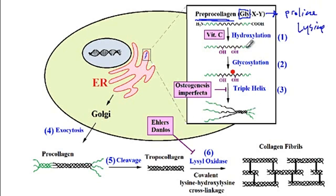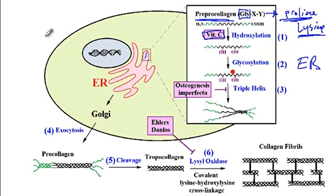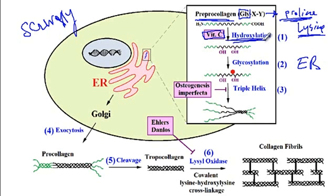The first three steps of collagen synthesis take place inside the endoplasmic reticulum. In the first step, there is hydroxylation of the proline and lysines, and this step requires vitamin C. Therefore, patients that have vitamin C deficiency will develop scurvy because their collagen has problems, and so they develop bleeding in the gums, ecchymosis, as well as petechiae, because there is a problem with the hydroxylation step of the collagen synthesis pathway.